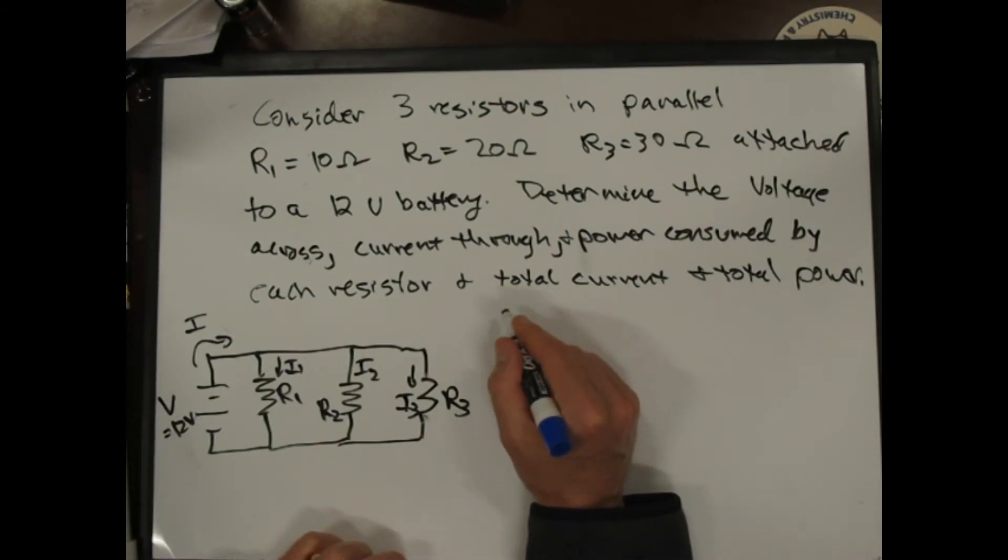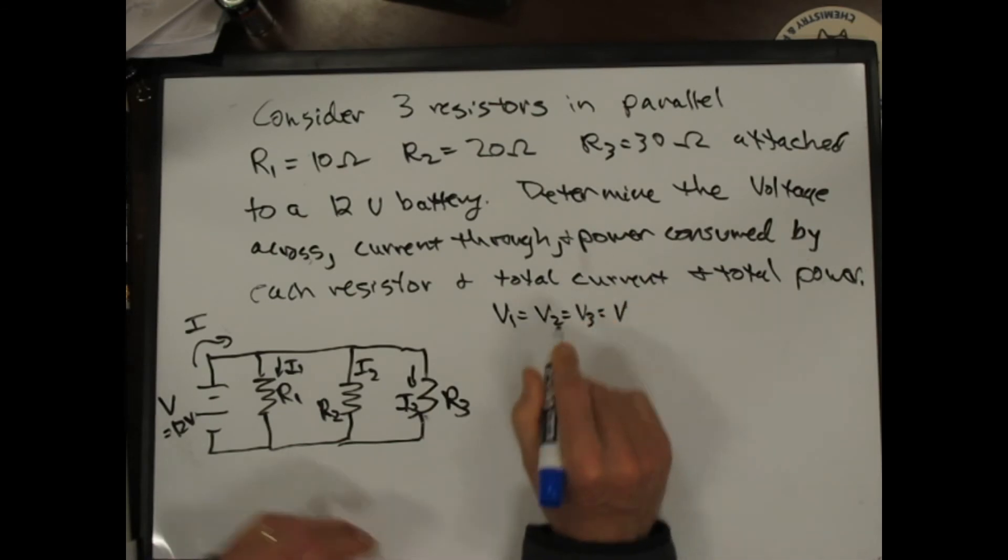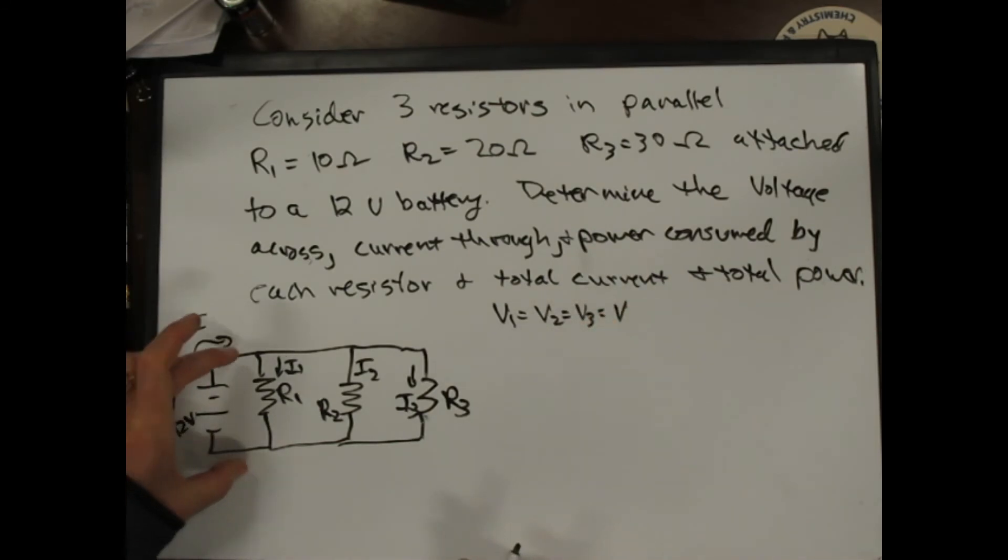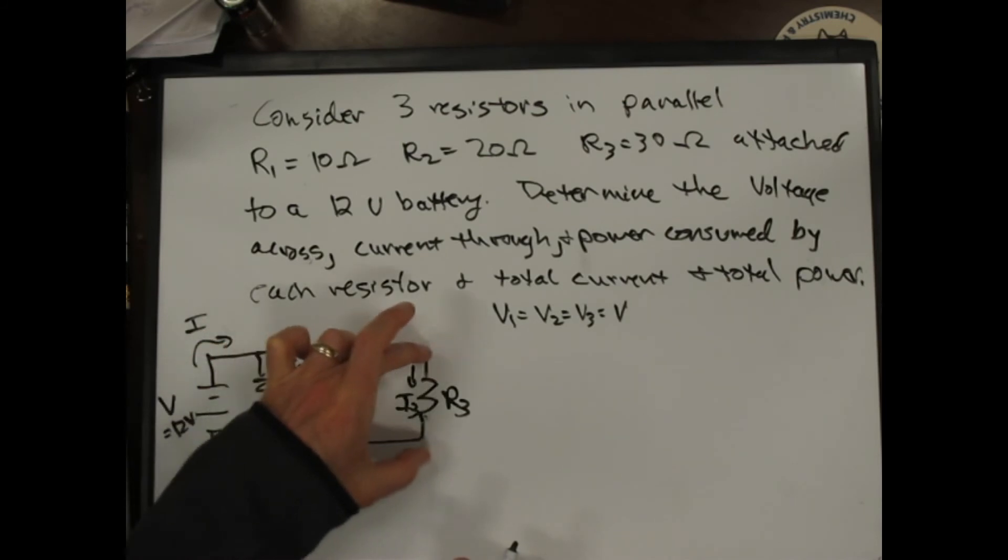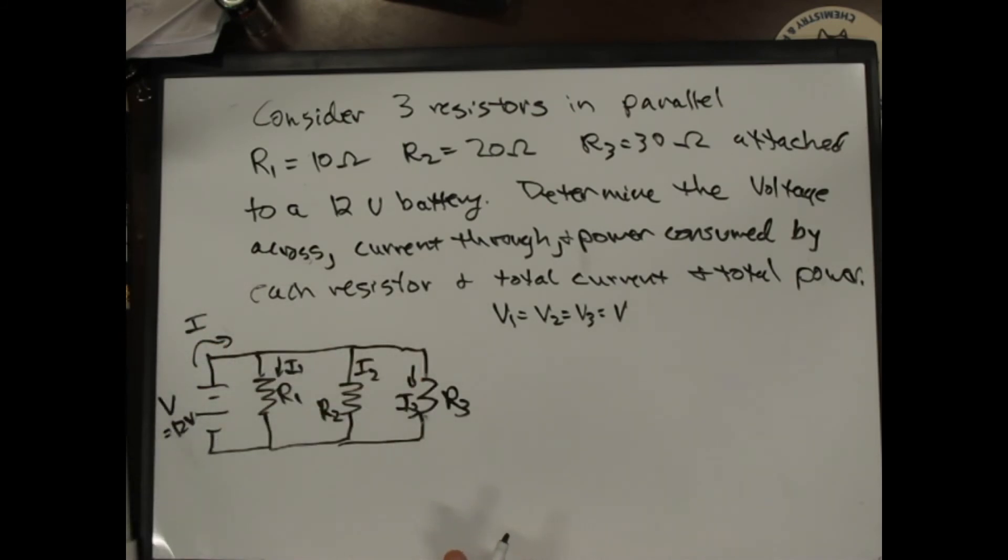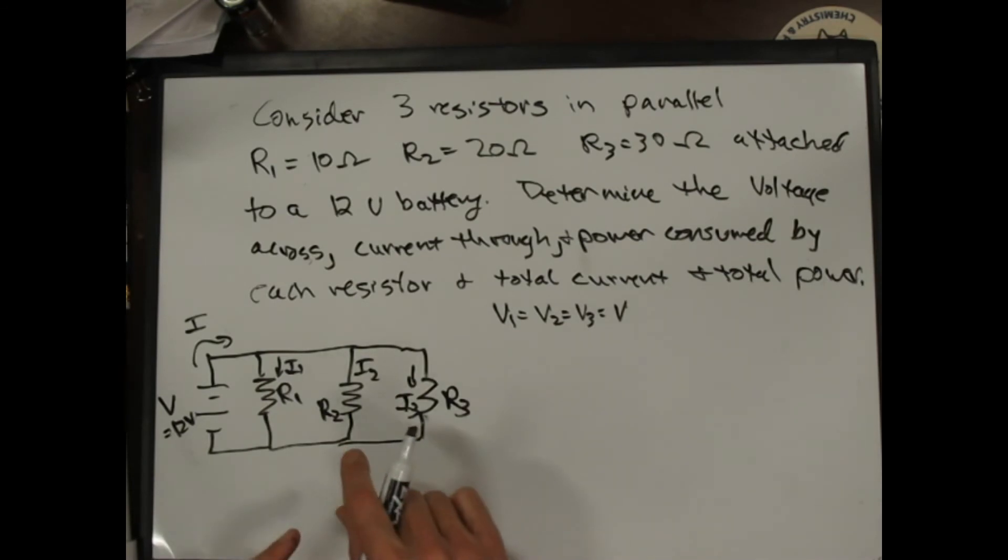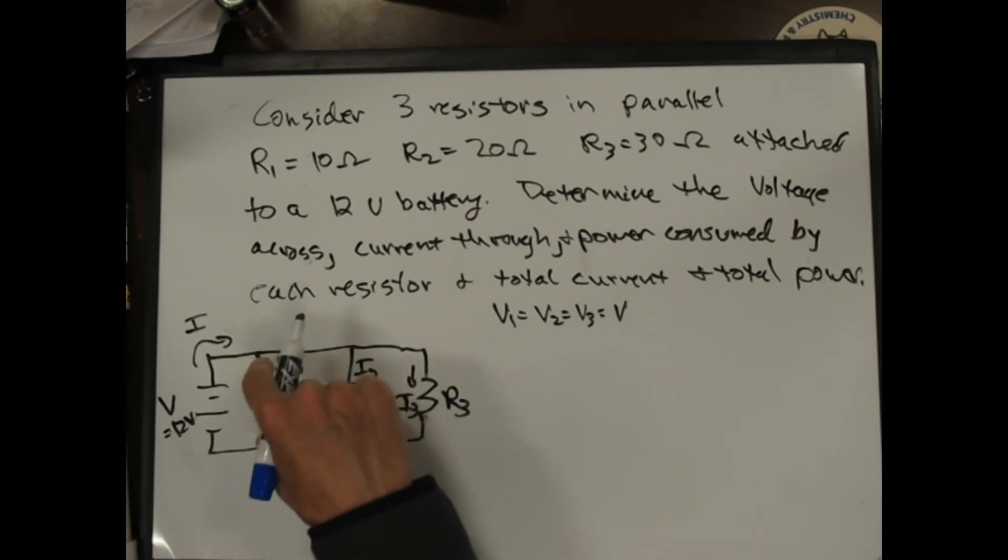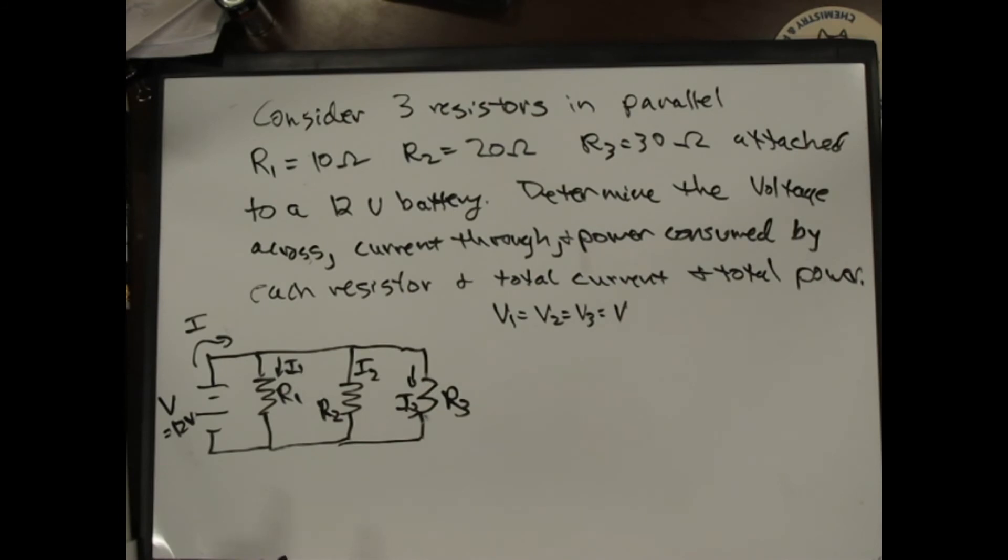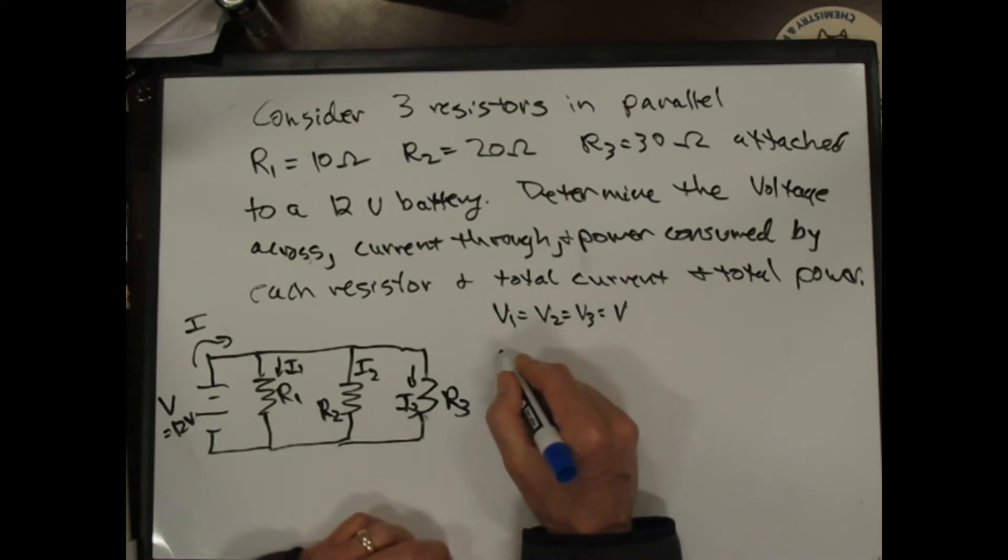The first thing we realize is that V1 equals V2 equals V3 equals V, right? Since both ends of my battery are connected by wires to either end of my resistors, each resistor sees the total voltage of the battery. It's not true when they're in series, because when they're in series, as you saw in the previous example, both ends of the resistor are not connected to both ends of the battery. But here all my V's are the same. And what that means is it's fairly straightforward for me to calculate the currents.